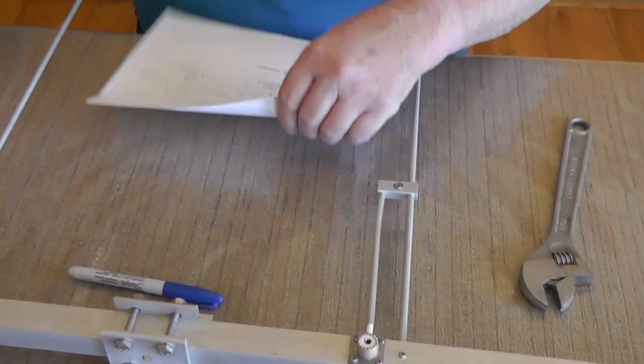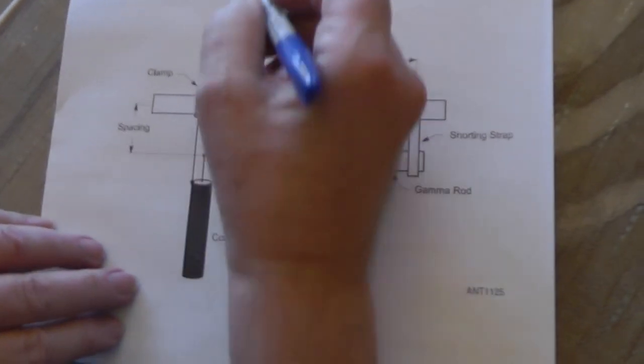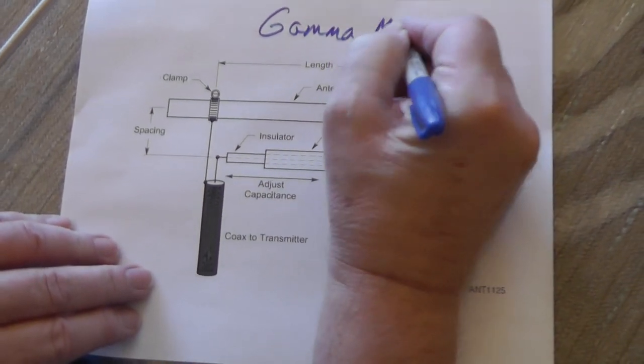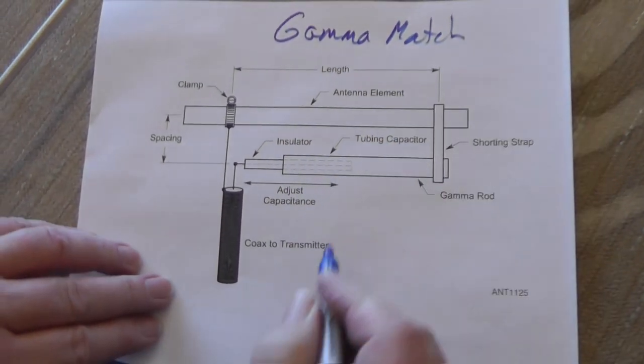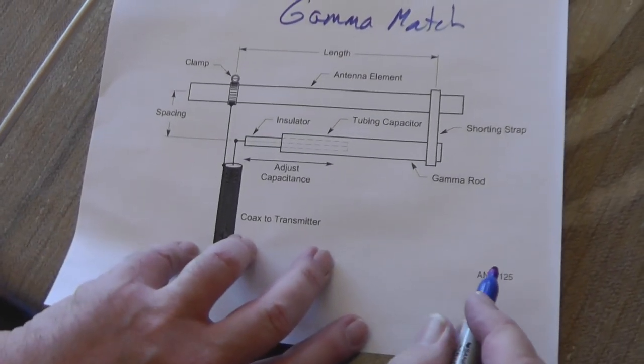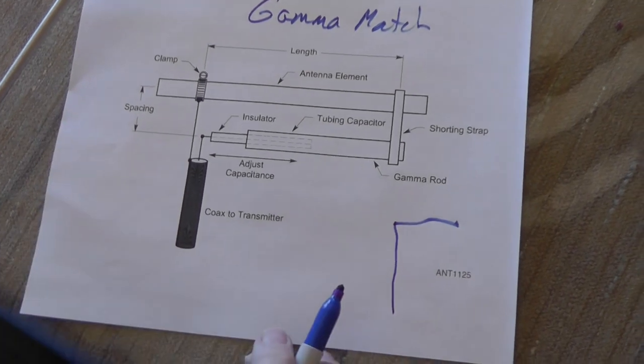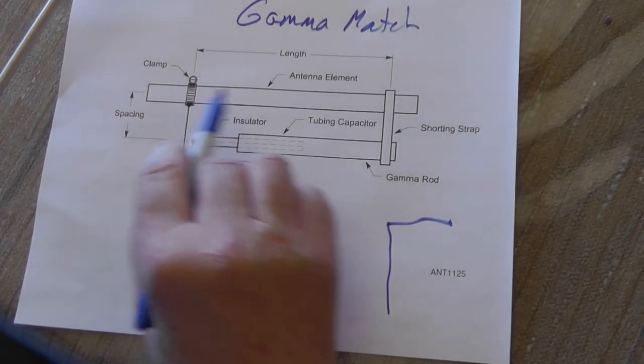Now let me show you this picture here. This shows the basics of a gamma match. I believe the capital gamma, gamma is a Greek letter, the capital looks something like that and that's kind of what we're doing here.